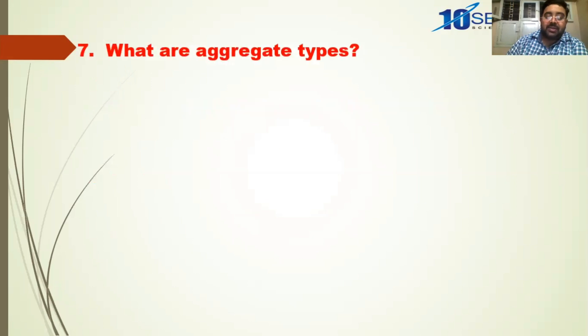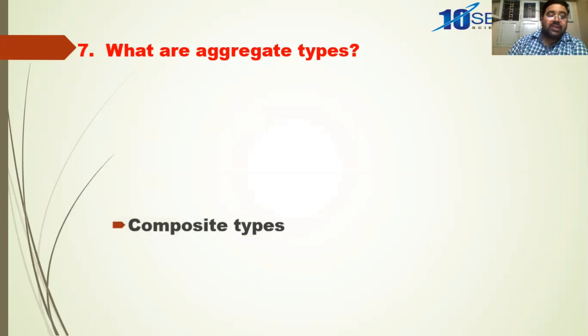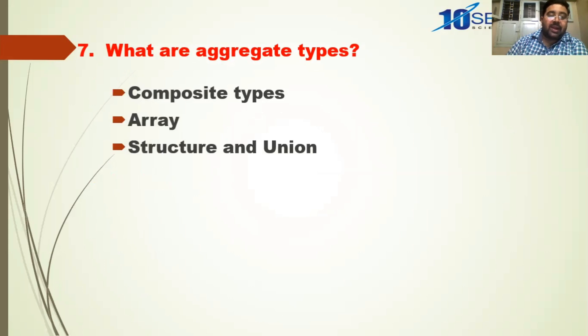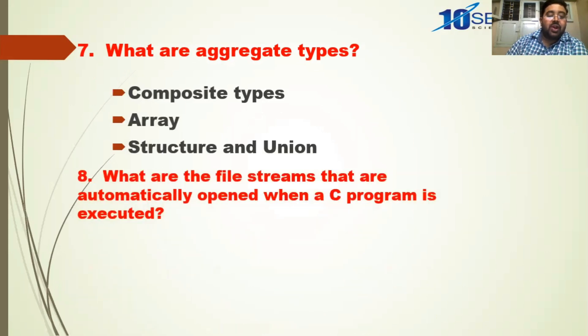What are aggregate types? Aggregate types are derived from basic types and are also called composite types. Array, structure, and union are the aggregate types available in C language.